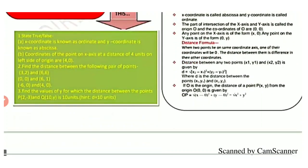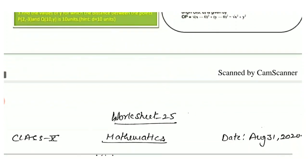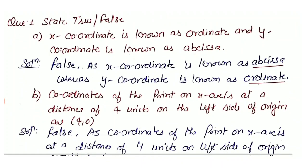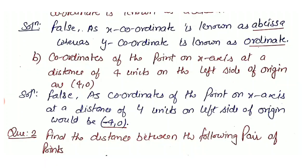Question 1 — State true or false. Part a: x-coordinate is known as ordinate and y-coordinate is known as abscissa. This statement is FALSE, as x-coordinate is known as abscissa and y-coordinate is known as ordinate. Part b: coordinates of a point on the x-axis at a distance of 4 units on the left side of origin are (4, 0). This is also FALSE — the coordinates would be (−4, 0), since moving left gives a negative x-coordinate.